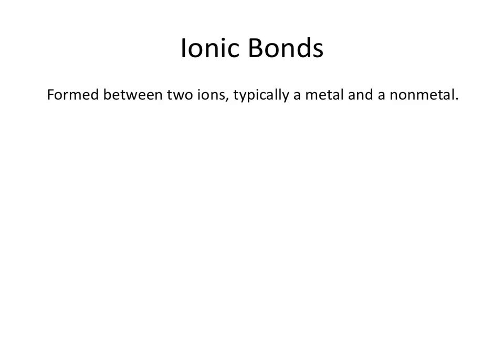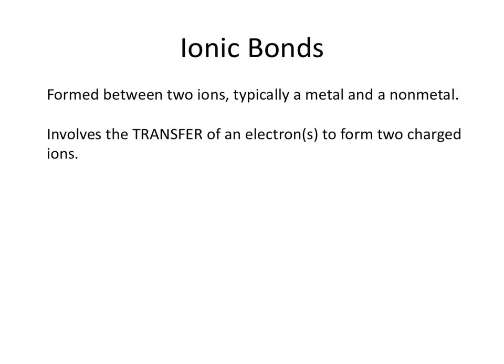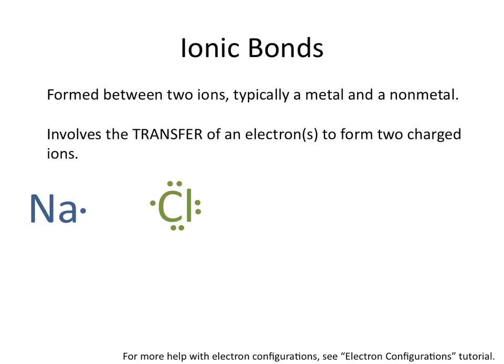Ionic bonds are formed between two ions, typically between a metal and a non-metal, and they involve the transfer of an electron to form two charged ions — from one atom forming a positive ion or cation, to another atom forming a negative ion or anion.